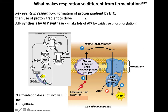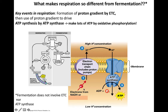So we combine formation of a proton gradient by the electron transport chain with using that proton gradient to drive massive ATP synthesis by ATP synthase. This way of making ATP — using the proton gradient and ATP synthase — is referred to as oxidative phosphorylation. This is our brand new way of making ATP, oxidative phosphorylation in a nutshell.